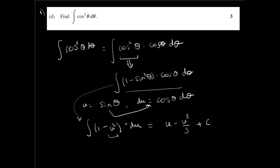Converting this back in terms of theta, the result is sin theta minus one-third sin cubed theta plus c. And so that's our final answer.